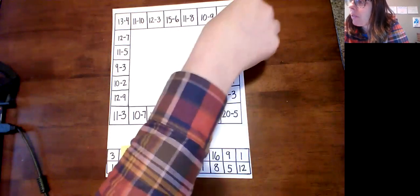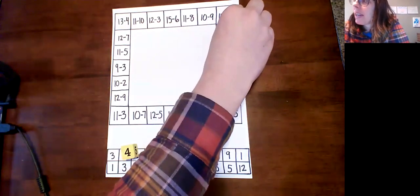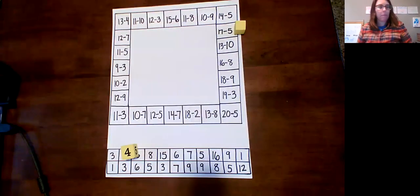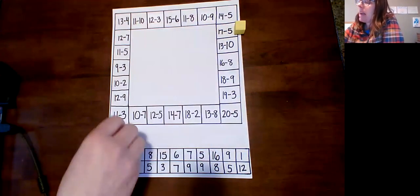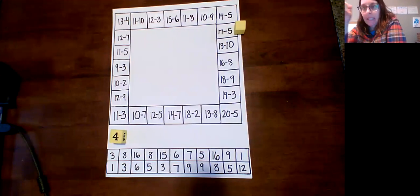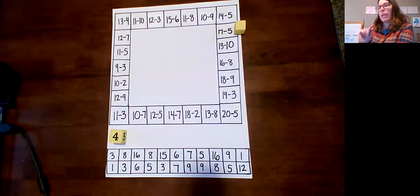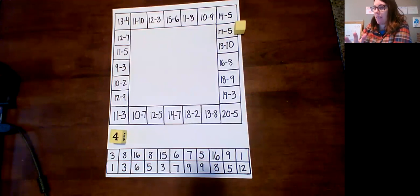I'm gonna set it just aside so I can see what the problem is. So 17 minus 5. So I have to put 17 in my head. How many fingers? Five fingers. So 17 minus 5: 17, 16, 15, 14, 13, 12.